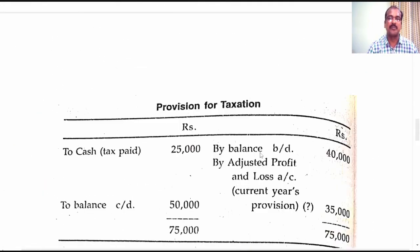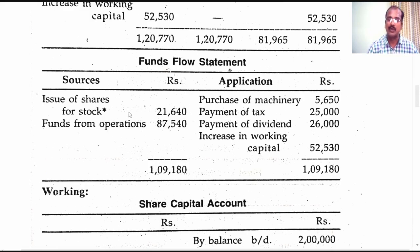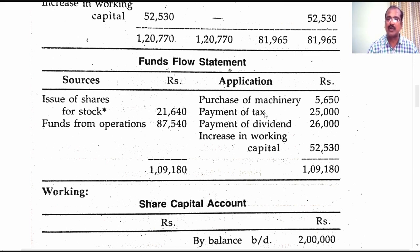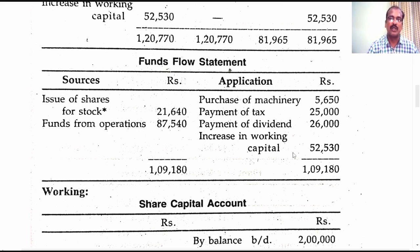Finally, let's look at the funds flow statement. If any current asset is purchased by way of issuing shares, that alone is recorded as a source of fund. Funds from operations of 87,540 is also a source of fund. Purchase of machinery is an application of fund. From the taxation account, 25,000 rupees of tax paid this year is an application of fund. Payment of interim dividend 26,000 and increase in working capital 52,530 are also applications of fund. The funds flow statement is now tallied with a total of 1,09,180 on either side.